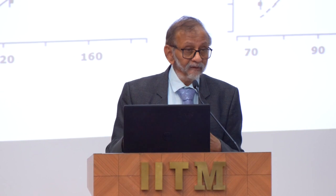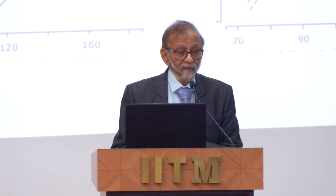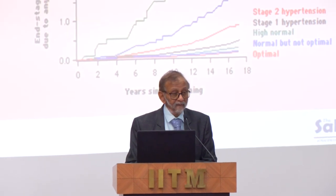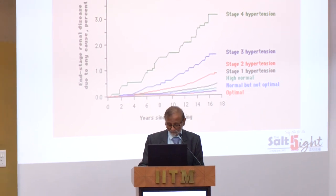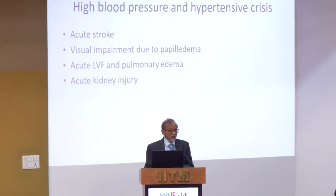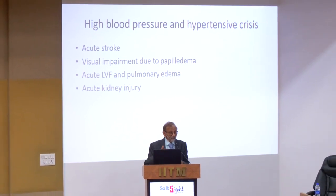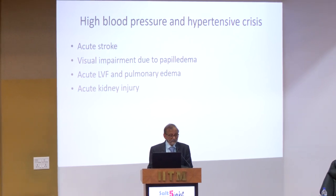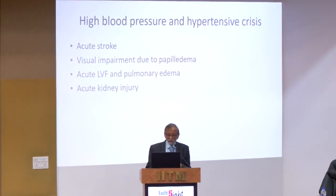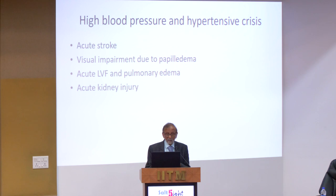Heart attack risk is significantly increased with increasing blood pressure. In the same way, the risk of cerebrovascular accident is significantly increased, and the risk of kidney disease also increases with increasing blood pressure. High blood pressure can sometimes get accelerated, become malignant, and lead to acute hypertensive crisis, which can manifest as acute stroke, visual impairment due to papilledema, acute left ventricular failure and pulmonary edema, and acute kidney injury.